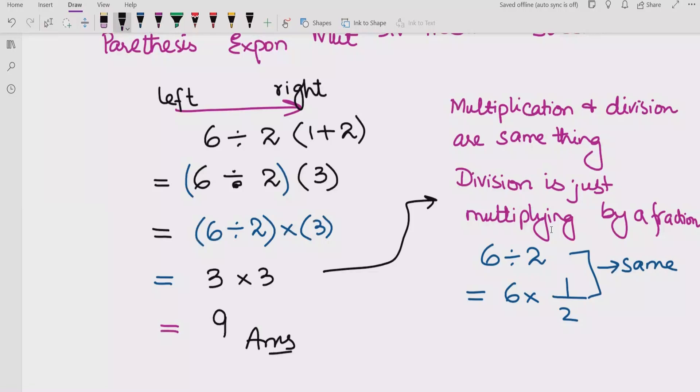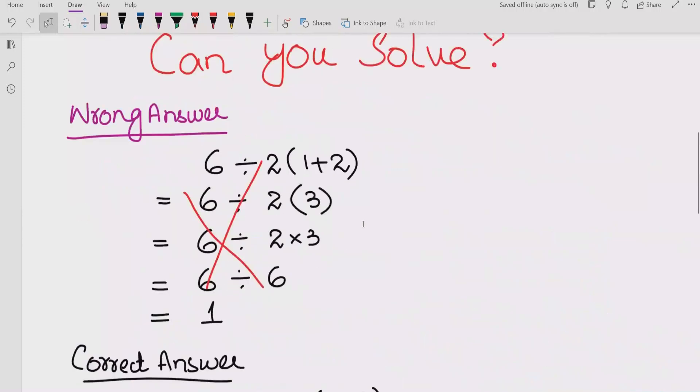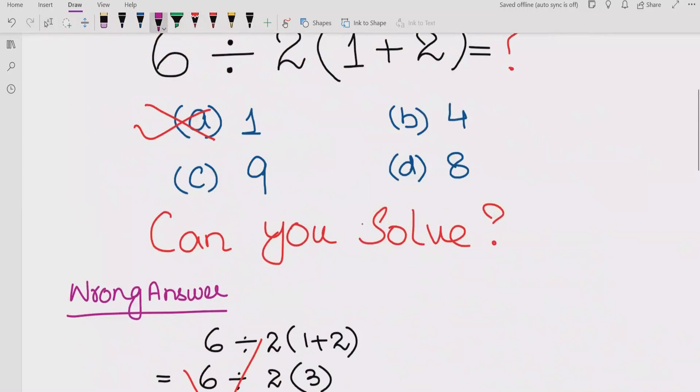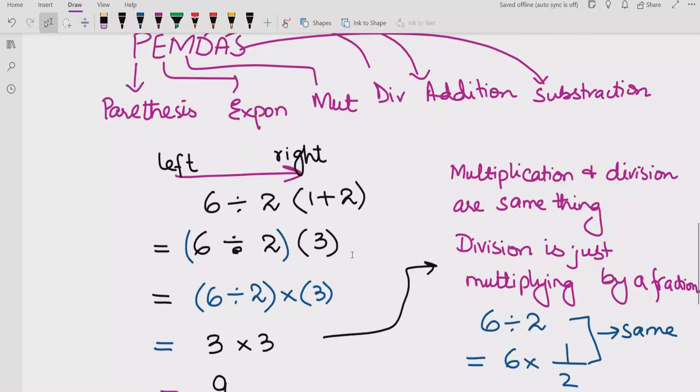So if you see this question and check any website showing the correct answer, this answer is 9, not 1. The correct answer of this question is 9. I hope you understand the logic behind this. If you see the PEMDAS rule, multiplication comes first, but multiplication and division are the same thing because division is just multiply by a fraction. So that's why we solve 6 divided by 2, and the answer we get is 9. I hope you understand the logic behind this.